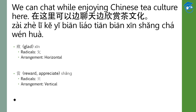Let's decipher the whole sentence. 在这里 should be straightforward — it means here. And 可以 means can. Then 边 — you have learned this as meaning 'side', like left side or right side, but here 边 means 'while' — doing something while doing the other thing. It acts as a conjunction. 聊天, as I said, means chat.